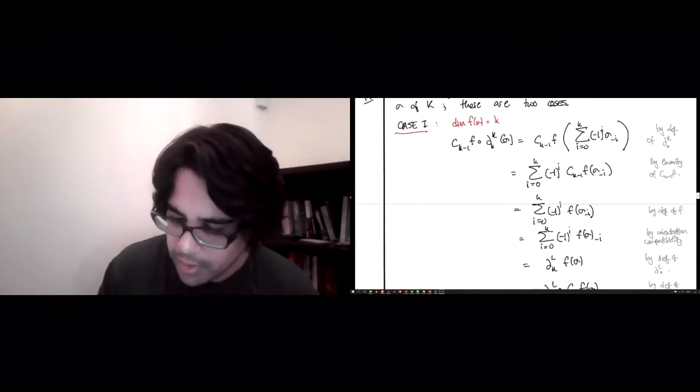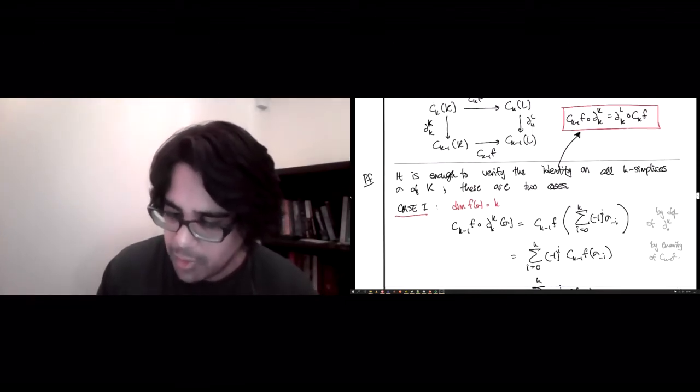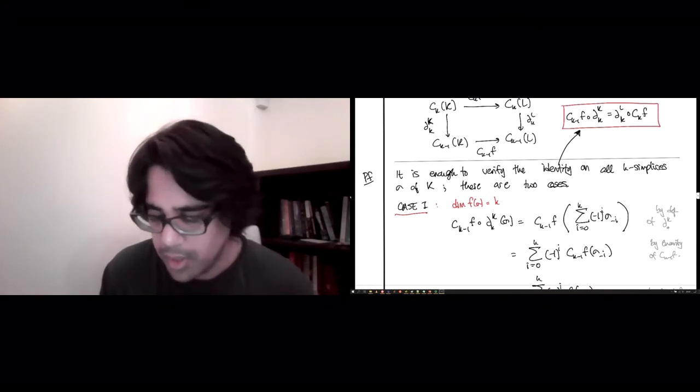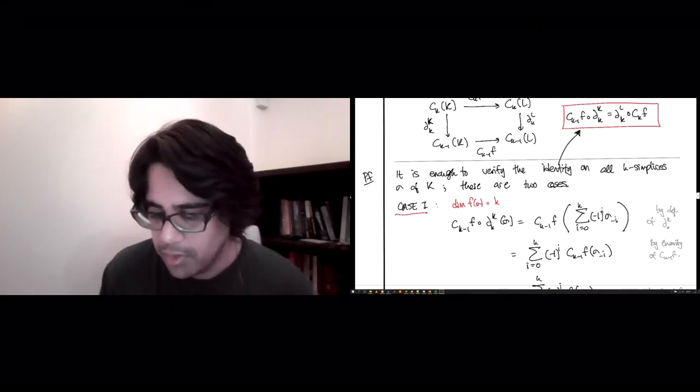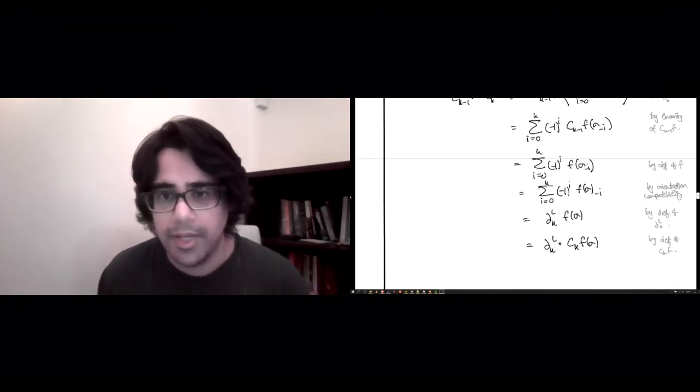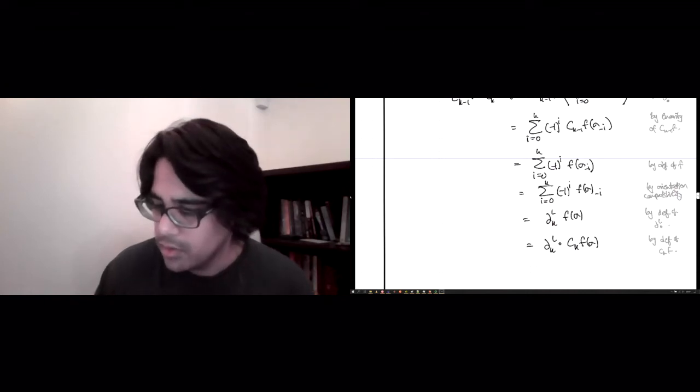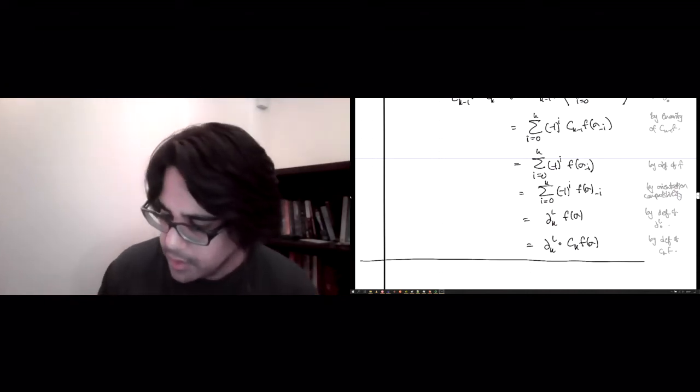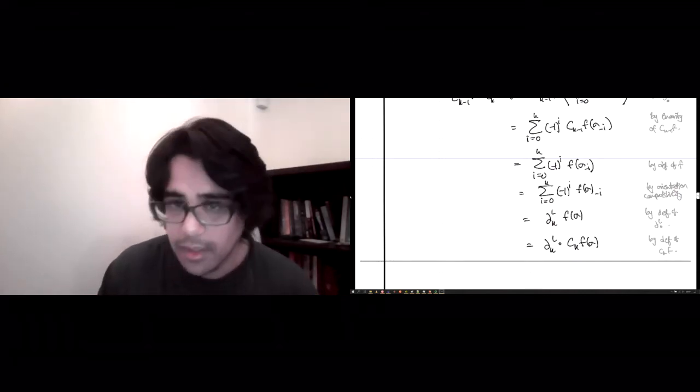We started with, it's been a while, but we started with c_{k-1}(f) composed with the boundary of σ. And then we ended with things having flipped. Now you have the boundary of L and c_k(f) on the other side. So, as expected, this thing commutes.